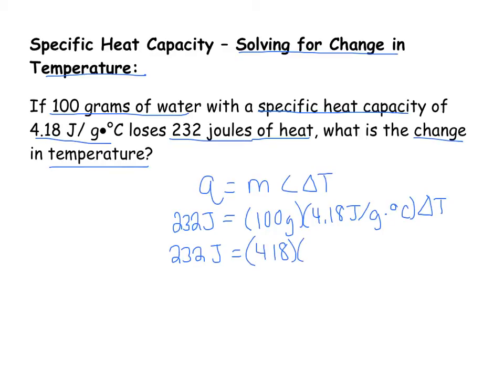So now I've basically isolated my delta T. And then I want to divide both sides by 418. So that'll cancel. Delta T is by itself. And then 232 divided by 418 gives me 0.56 degrees Celsius. And all of our units would cancel here to be left with our final unit of degrees Celsius.